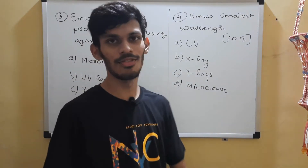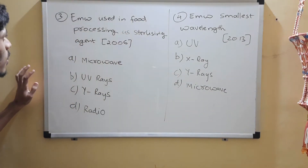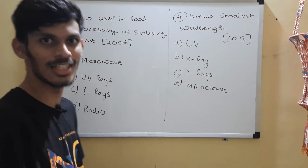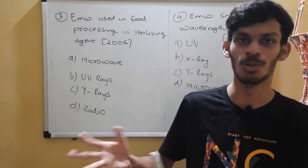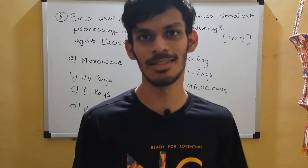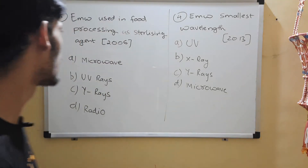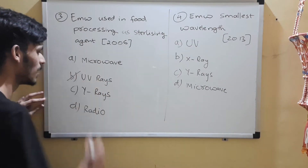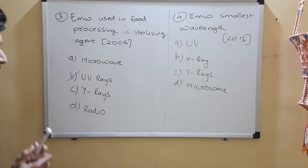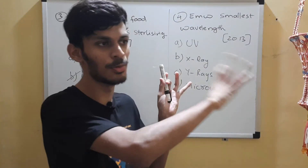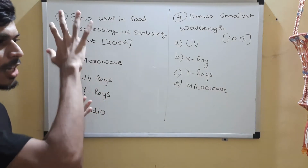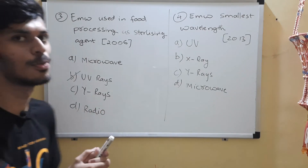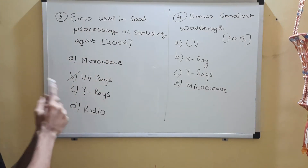Questions 3 and 4. Question 3 is from 2006: which electromagnetic wave is used in food processing as a sterilizing agent? These are fact-based questions — if you know, great; if not, you can guess (+3, −1) or leave it (+0). The correct answer is option B: UV rays are used in food processing as a sterilizing agent. The last few pages of your NCERT sum this up — they list electromagnetic radiations along with their applications. Do read your NCERT, especially the last few pages.